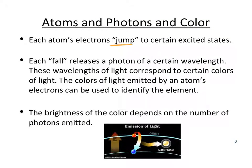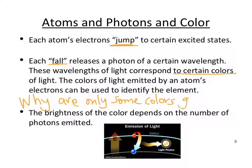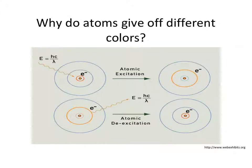So each atom's electrons jump to certain excited states. Each fall releases a photon of a certain wavelength. And these wavelengths of light correspond to certain colors of light. The colors of light emitted by an atom's electrons can be used to identify the element. And so Bohr's idea was, why are only some colors given off? And that's where he thought that there must be rings or energy levels. Only some colors are given off because there's only some places that those electrons can fall.